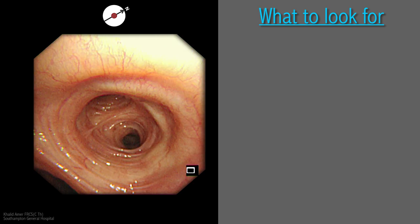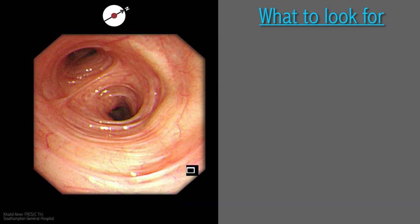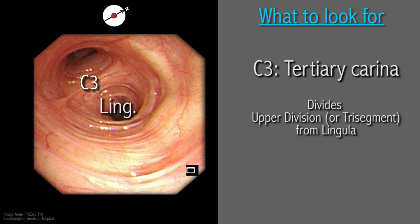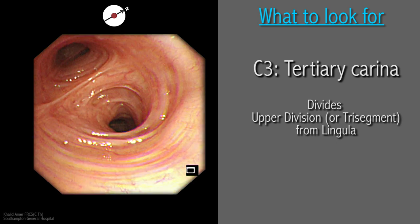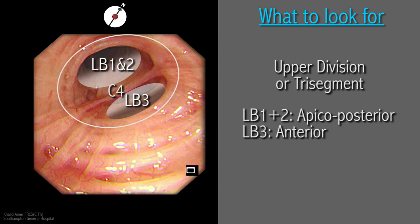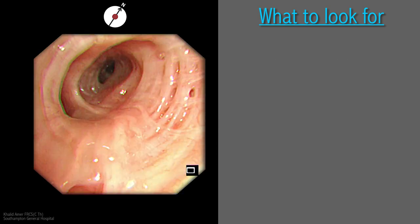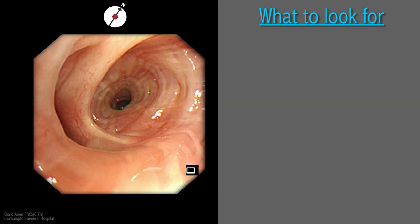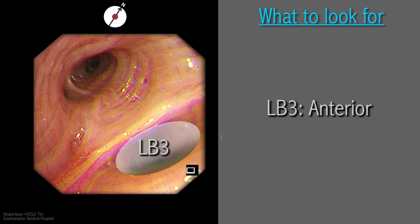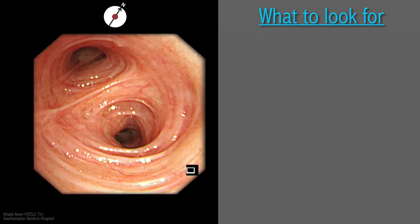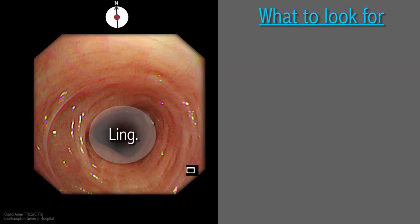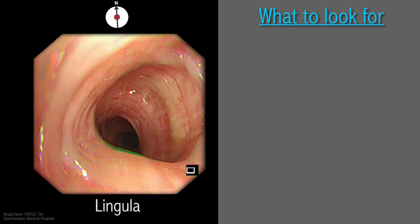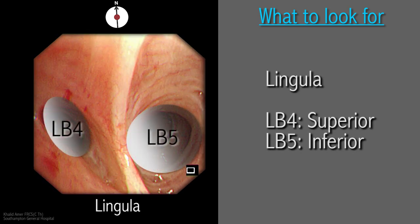On approaching the left upper lobe divisions, it is important to identify the tertiary carina C3 between the upper division and the lingula. On advancing the scope into the upper division, the quaternary carina divides the apicoposterior segmental bronchi LB1 and LB2 from the anterior segmental bronchus LB3. The scope is then introduced into the lingula to expose the two segmental divisions: superior LB4 and inferior LB5.